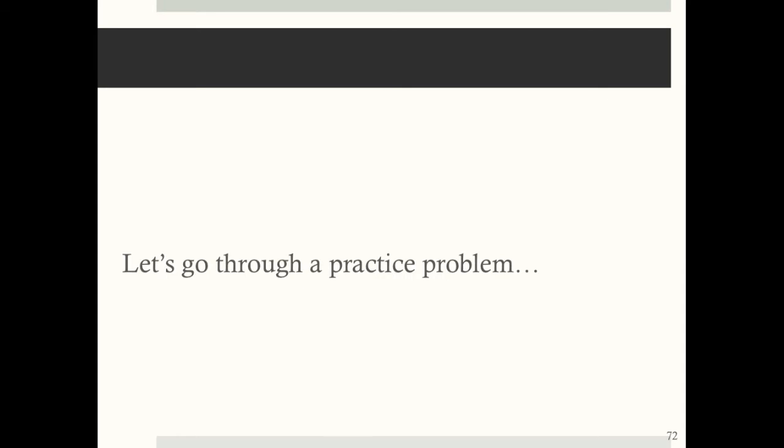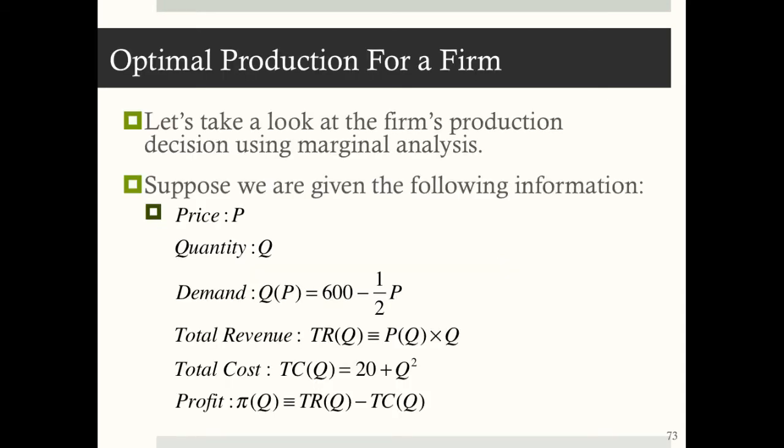Let's go through a practice problem. We're given the following information: P is price, Q is quantity, the demand curve is Q = 600 − ½P, total revenue is price times quantity, total cost is 20 + Q², and profit is total revenue minus total cost.